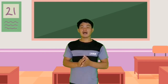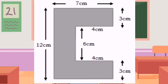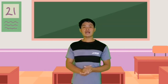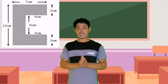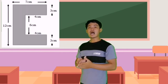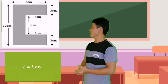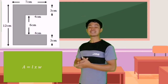Now I want you to try this example on your own — find the area of the shaded region. Now let us check your work. In this figure, we have two shapes of rectangles. So our formula must be area equals length times width.